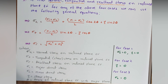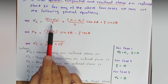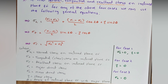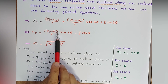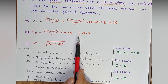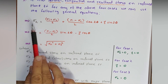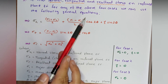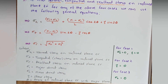The equations are: sigma n = (sigma 1 + sigma 2)/2 + (sigma 1 − sigma 2)/2 · cos(2θ) + τ · sin(2θ). For tangential stress: sigma t = (sigma 1 − sigma 2)/2 · sin(2θ) − τ · cos(2θ). The resultant stress is: sigma r = √(σn² + σt²). These equations allow us to calculate normal, tangential, and resultant stresses on the inclined plane EF for all four cases.